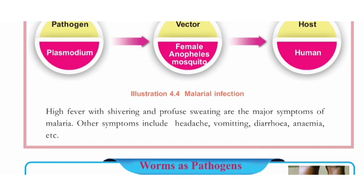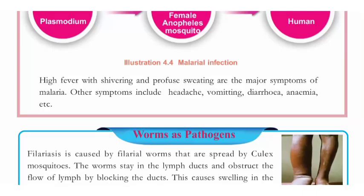High fever with shivering and profuse sweating are the major symptoms of malaria. Other symptoms include headache, vomiting, diarrhea, and anemia. These are the primary symptoms of malaria. Plasmodium is transmitted by the female Anopheles mosquitoes, which are the vectors.